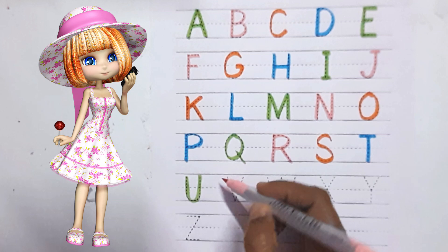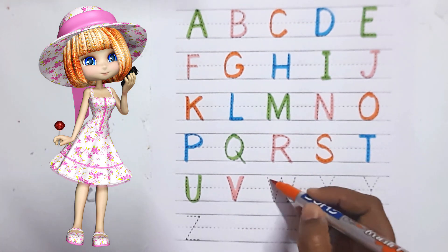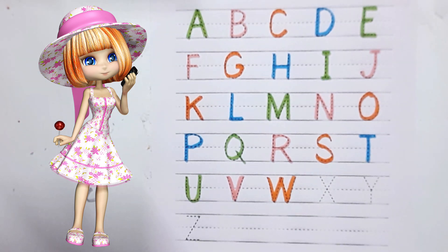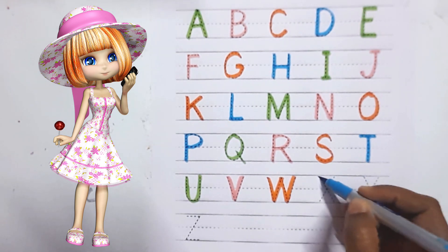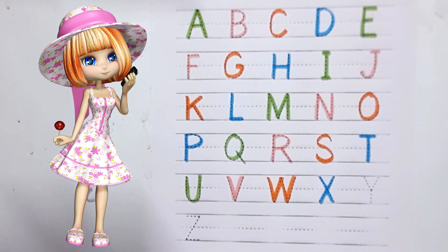U for unicorn. V for bhen. W for watch. X for ex-mas.